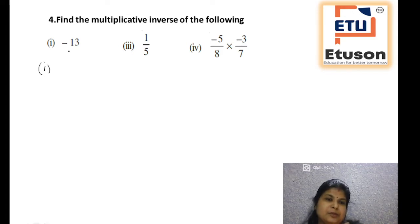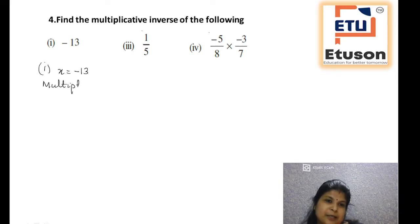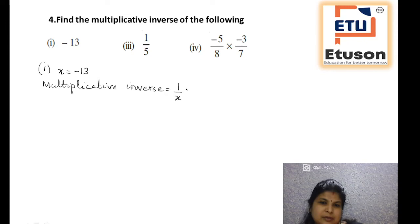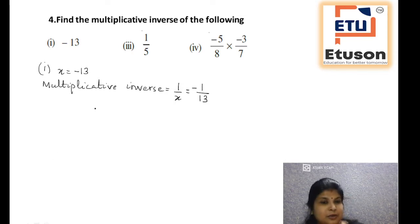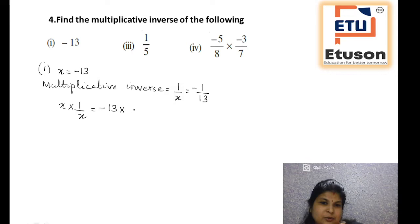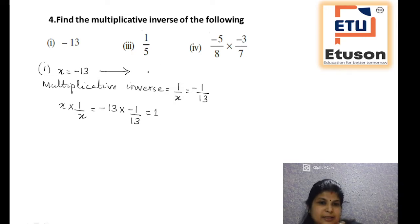For bit 1, your number is minus 13, so x is minus 13. The multiplicative inverse, that is 1 by x, equals minus 1 by 13. To cross check: x into 1 by x is minus 13 into minus 1 by 13, and the answer is 1. So the multiplicative inverse of minus 13 is minus 1 by 13.